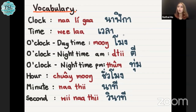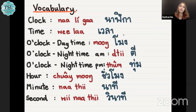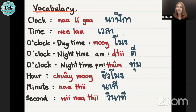Let's see about the vocabulary first, because this vocabulary is all about time and we need to know it first. The first word is clock. Clock in Thai, we say nalika, nalika.